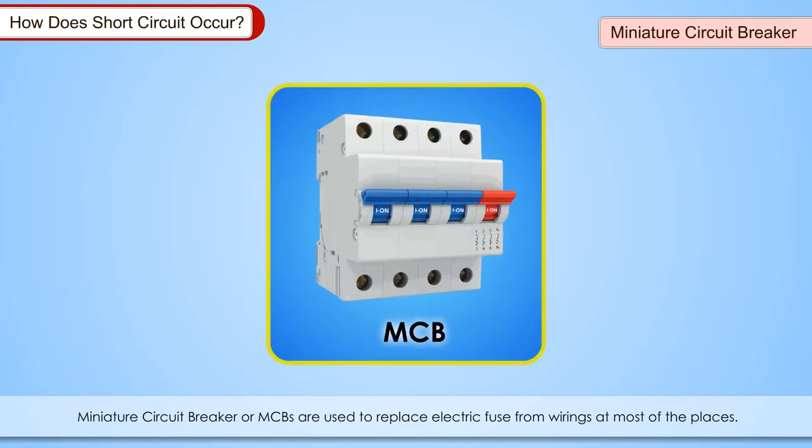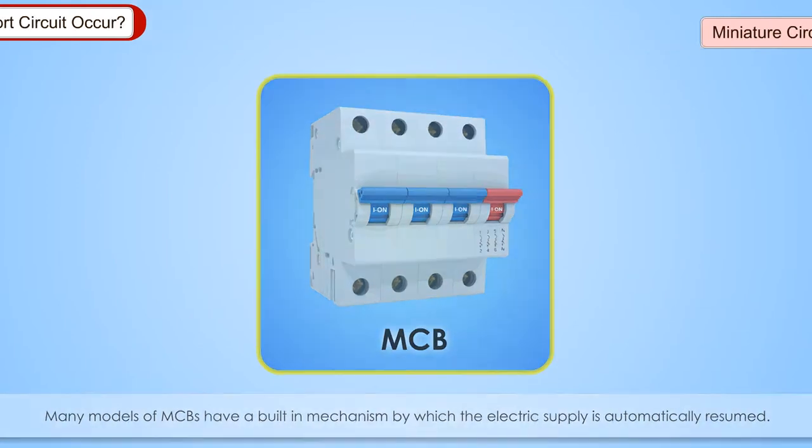Miniature circuit breaker: Miniature circuit breaker, or MCBs, are used to replace electric fuse from wiring at most of the places. The electric fuse has a big practical problem. Whenever the wires fuse, one needs to replace the wire to resume electrical supply. This becomes a tedious task. Miniature circuit breakers break the circuit automatically. One just needs to switch it on to resume the electrical supply. Many models of MCBs have a built-in mechanism by which the electric supply is automatically resumed.